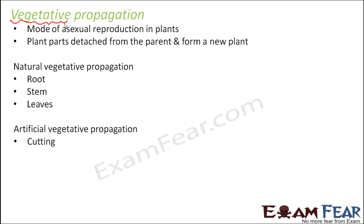There are different techniques for artificial vegetative propagation: cutting, layering, and grafting. These are the common techniques. We will now quickly look at the different ways of natural and artificial vegetative propagation.